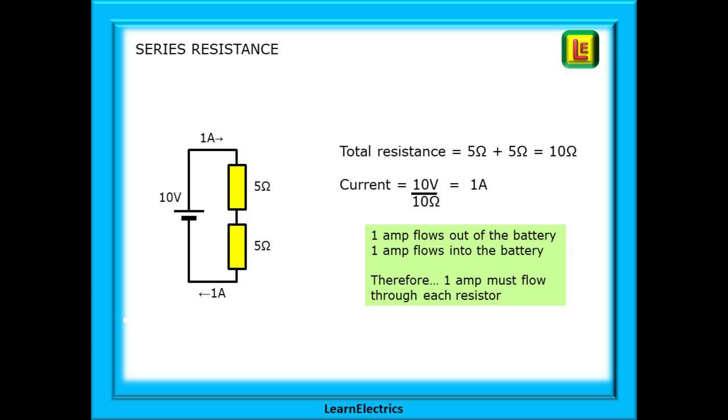To calculate the current flowing, we divide 10 volts by 10 ohms and we have 1 amp of current. 1 amp flows out of the battery, 1 amp flows into the battery, therefore 1 amp must flow through each resistor.